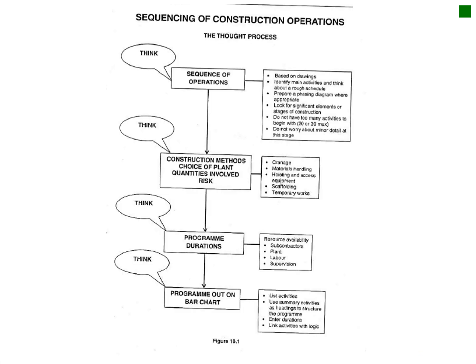You will always see that line whenever you look at the facade of the building. Figure 10.11 is a very important slide — whenever you do your sequencing, you have your sequence of operations, then your construction methods and choice of plant, then your program direct durations, and your program put out on a bar chart. This is more or less the process for scheduling. If you use programs like CCS or Microsoft Project, these items can take place fairly simultaneously — you do not have to complete the first three items before developing your bar chart. You can sequence items, look at methods, put in durations, and link items to produce your bar chart.